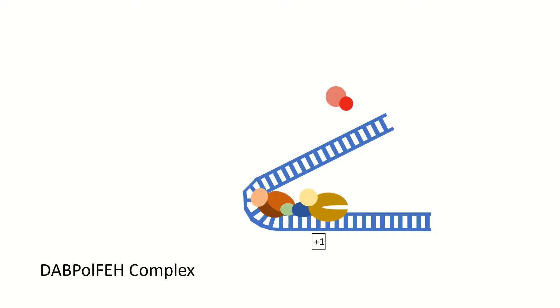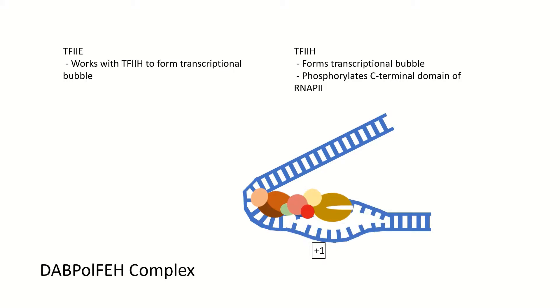TF2E and TF2H are then co-recruited to form the DAB-PolF-EH complex. TF2E works with TF2H to melt DNA and form the transcriptional bubble at the promoter. TF2H consists of 10 total subunits. The seven subunit core possesses helicase and ATPase activities involved in double-stranded DNA melting to form the transcriptional bubble. The remaining three subunits make up a cyclin-activating kinase subcomplex, involved in reversible phosphorylation of the C-terminal domain of RNAP2, which is critical for promoter clearance.